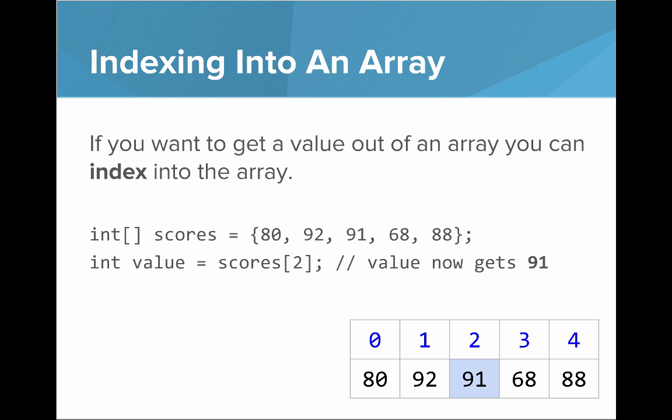So the next thing you want to learn about is indexing into an array. If you want to get a value out of an array, you can index into the array. That's what it's called to access a value at a spot. So if we have our scores array, then we say something like int value equals scores at two. We can see that value now gets the number 91.